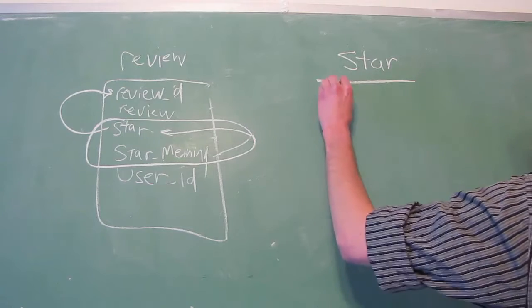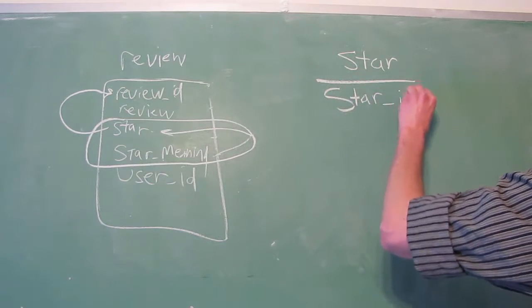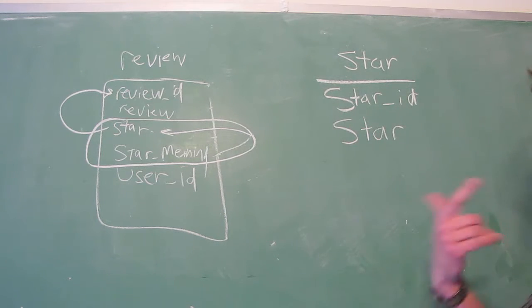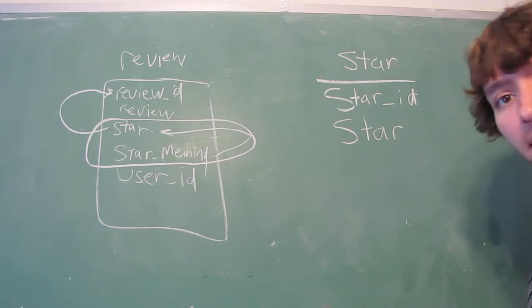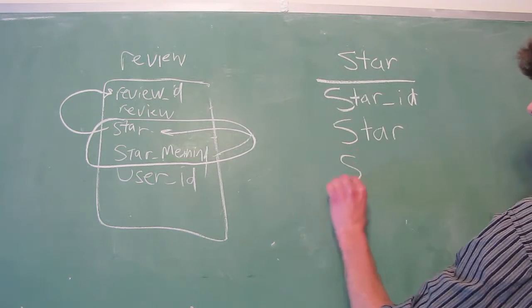Within the star table, we're going to have a star ID, and then we're going to have the actual star, whether it be one, two, three, four, five, or whatever kind of rating system you're using. And then we're going to have the star meaning.